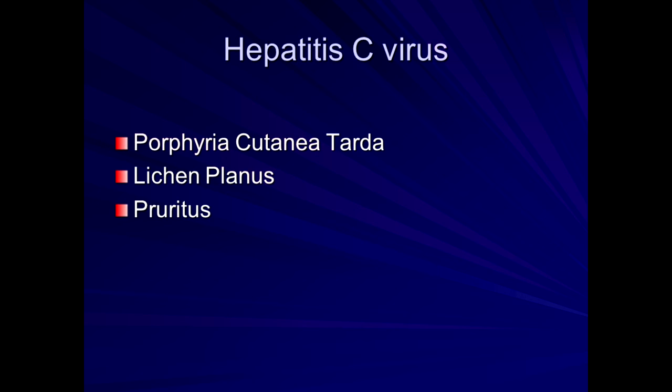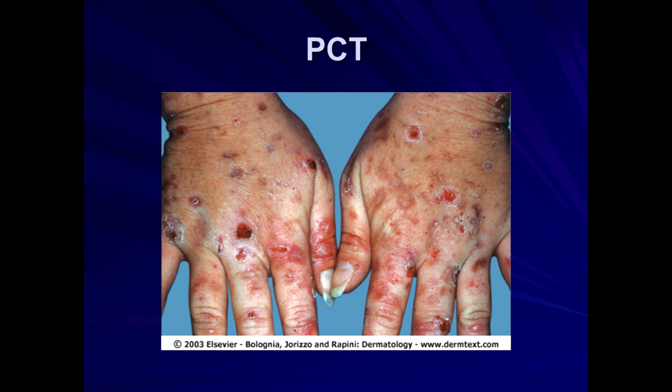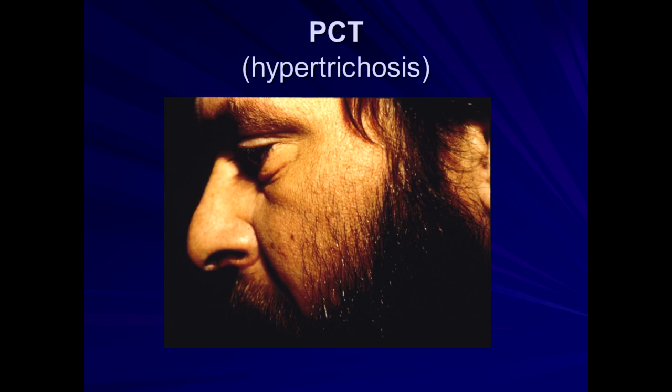Hepatitis C patients can have multiple skin findings: itch, lichen planus, and porphyria cutanea tarda. PCT patients classically have blisters on sun-exposed areas — tops of the hands — and their skin can be very fragile, broken down. These patients often undergo serial phlebotomy as treatment and also respond to low-dose hydroxychloroquine in some cases. This is a PCT patient with fragile eroded blisters on the hands. Hypertrichosis — excess hair growth — and then you find out the patient has hepatitis.